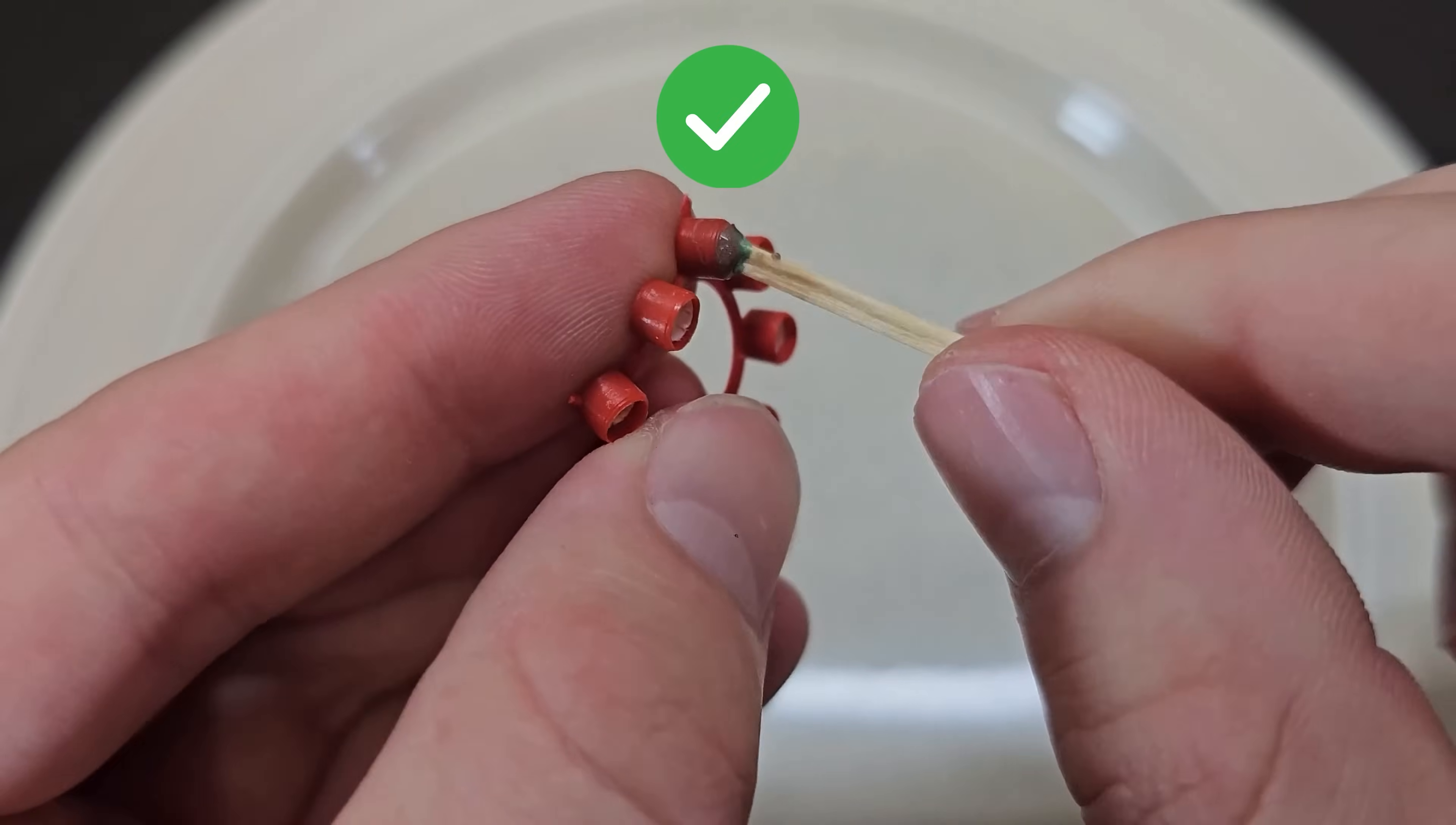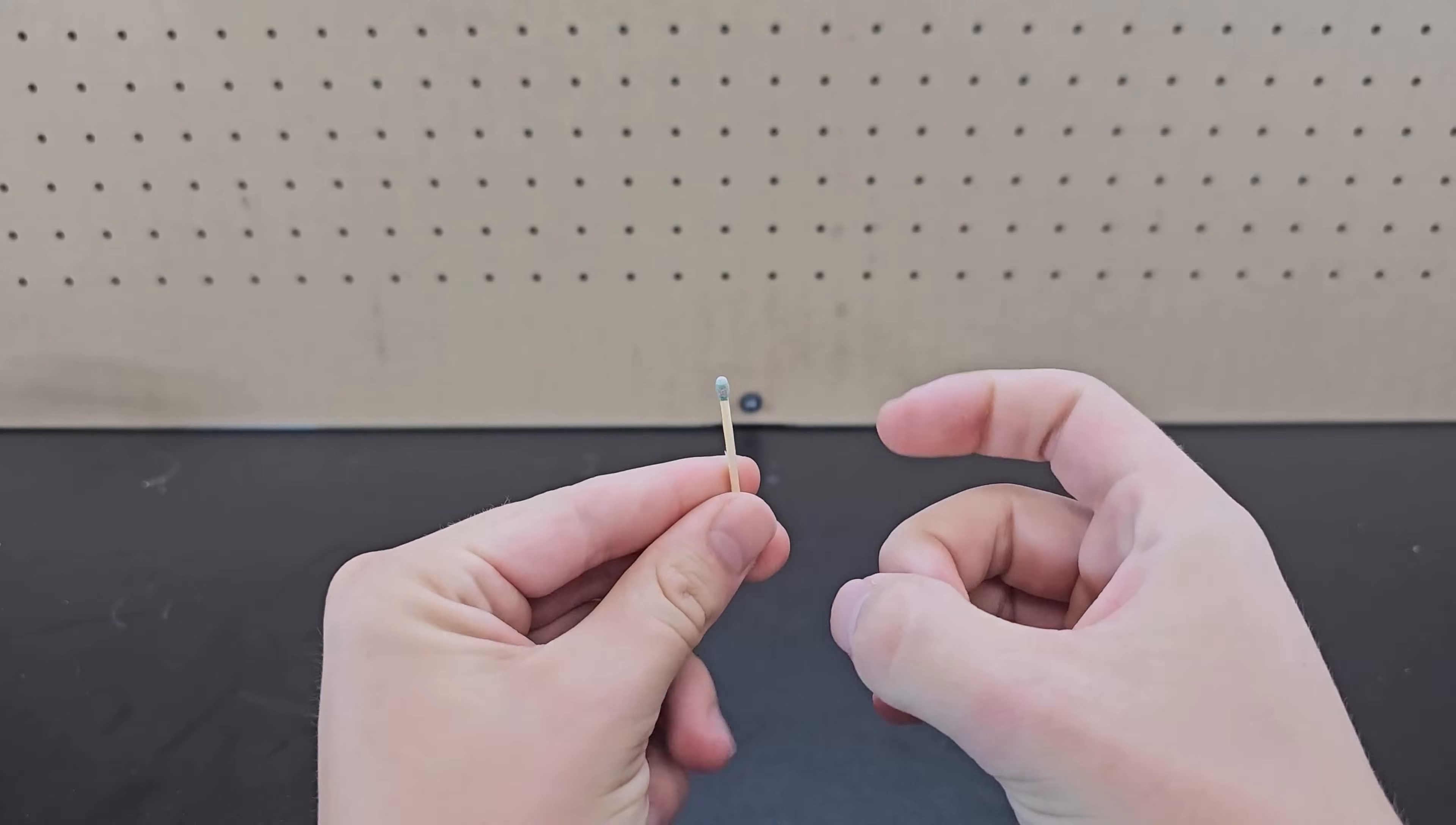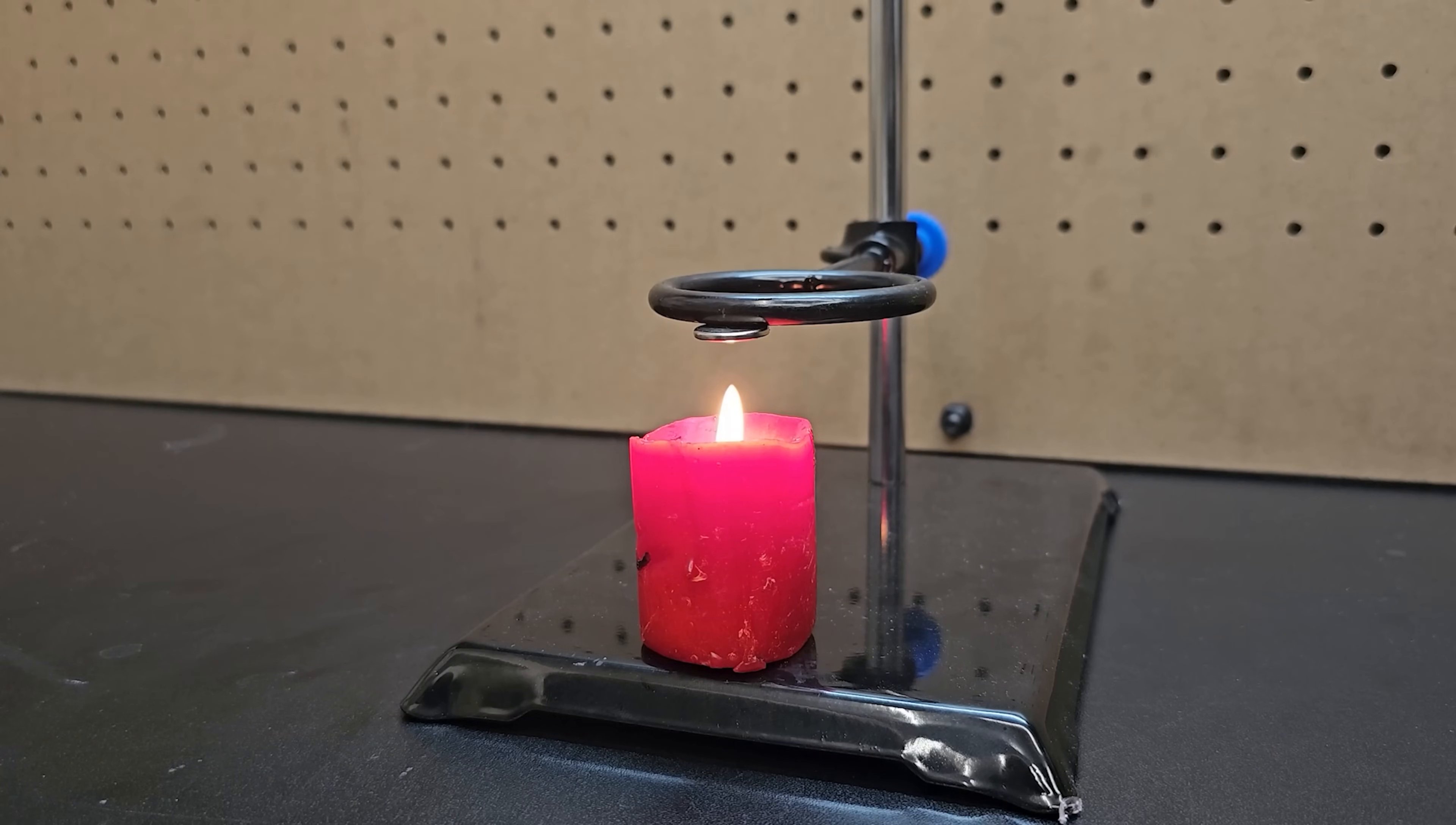It's true that dipping a match in cap gun refill ammo and letting it dry allows you to flick the match to light it, since the powder coating ignites really easily which then lights the match. It's also true that magnets lose their magnetic strength when they reach hotter temperatures.